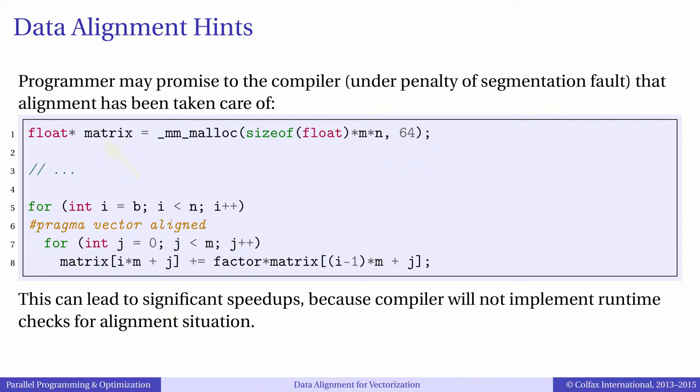Consider this example. We have a matrix of size M by N stored in a row-major format and we have two loops, one in I traversing the rows and the other in J traversing the columns. If we want 64 byte alignment access in the inner vector loop, we have to make sure that for any value of I, the data for J equals 0 is aligned.